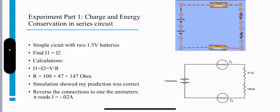R is the sum of the two resistors, R equals 47 ohm plus 47 equals 147 ohm. The simulation showed my prediction was correct.